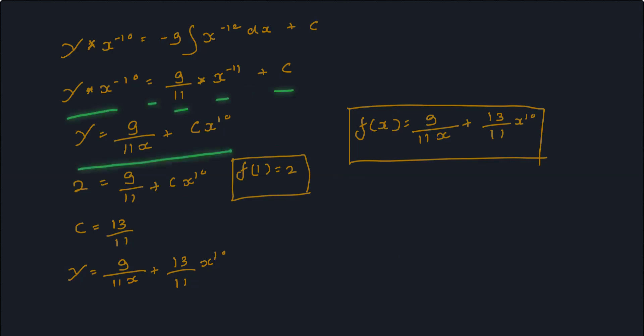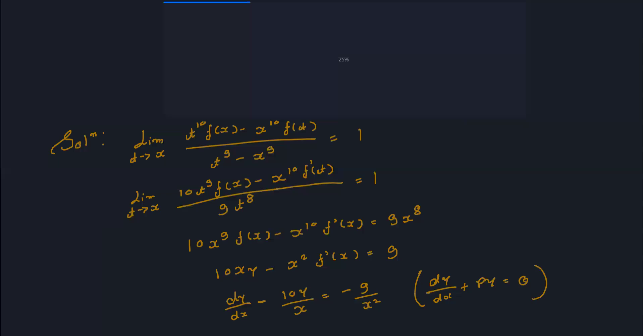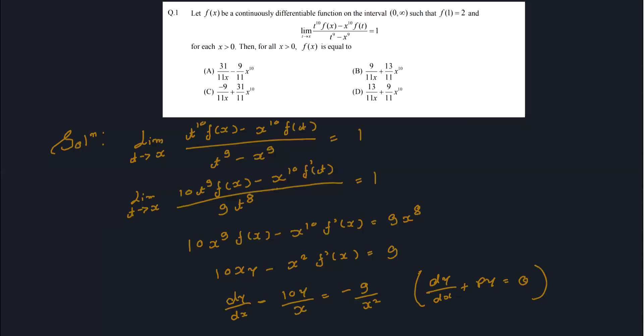f(1) = 2 की value use करके, c = 13/11 आती है। Final result: f(x) = (9/11)x + (13/11)x^10, which corresponds to option D. Please like and subscribe, thank you.